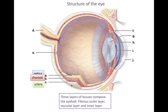Letter C is our sclera, which is the white part of our eye, and you can see that it wraps nearly the entirety of the eyeball except for a couple key places. Next, we have the optic nerve, which is going to essentially send messages that our eyeball creates back to our brain for interpretation.